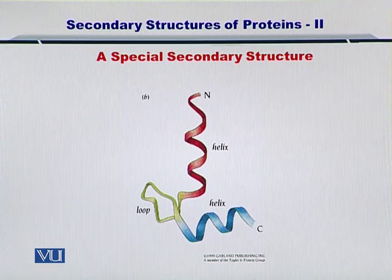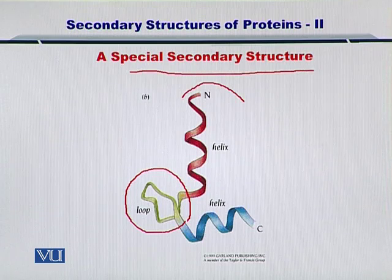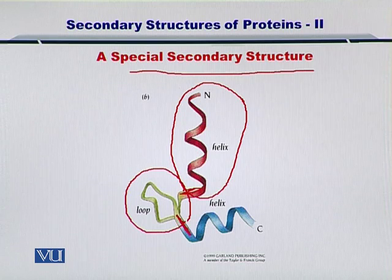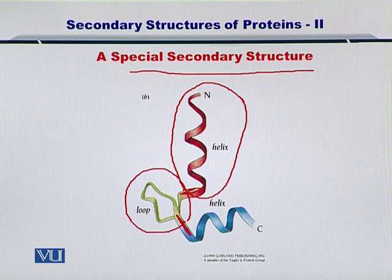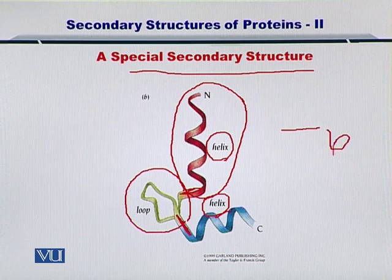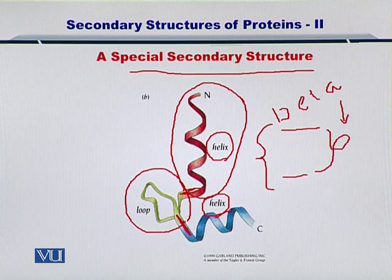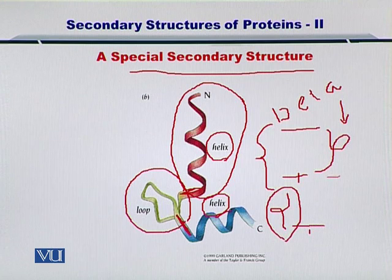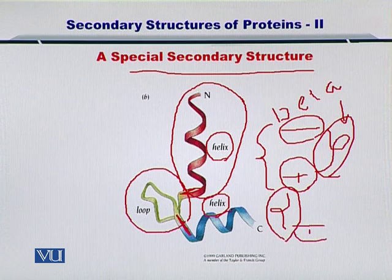The next secondary structure we are going to look at is the loop. As shown here in the slide, the loops — shown in green — are essentially special secondary structures which bring together alpha helices or beta sheets. They simply join them by taking the ends of alpha helices or beta sheets and holding them by the two ends of the loops. So instead of an alpha helix, it could be a beta sheet brought together by a loop. These two loops are actually bringing together one, two, and three beta sheets.